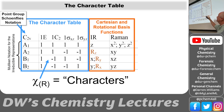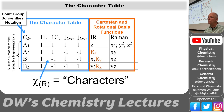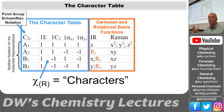Over on the right are the Cartesian and rotational basis functions. We see X, Y, and Z as Cartesian functions, but also second-order combinations like X², Y², XY, YZ, and XZ. Those second-order ones we will use to determine Raman selection rules.